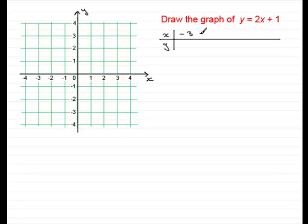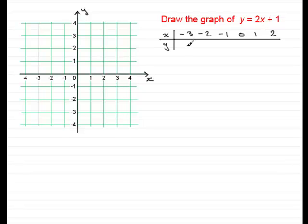So let's take the integers minus 3, minus 2, minus 1, 0, 1, and 2. When I put these values through the equation, let's take x is minus 3: we have 2 times minus 3 plus 1, which is minus 5.